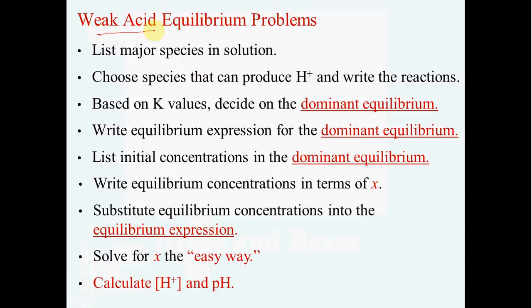The steps for working these weak acid equilibrium problems are always the same. First you need to decide the major species or the species that actually is going to produce the H+ and control the pH. Based on your K values you will decide on what that dominant equilibrium is. Once you've decided you'll write the equilibrium expression for that dominant reaction. You'll list the initial concentrations. You'll write the equilibrium concentrations in terms of x and you'll substitute in to the equilibrium expression. And you'll solve for x the easy way which is by eliminating x's that are added or subtracted and simplify.